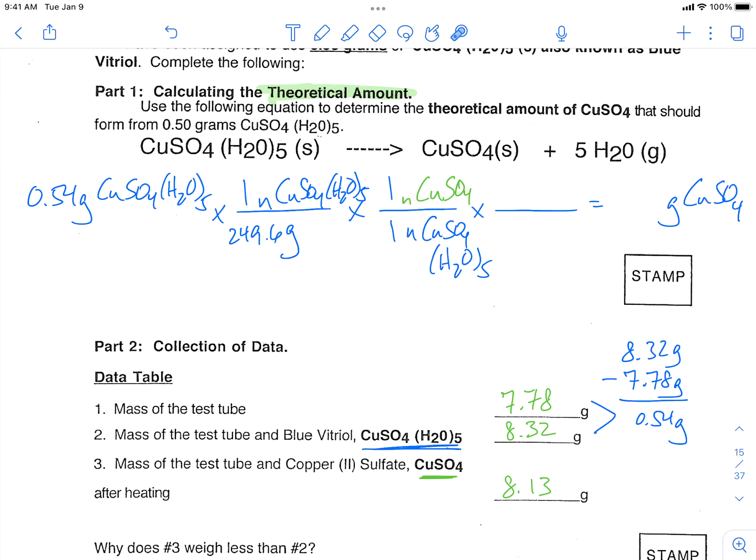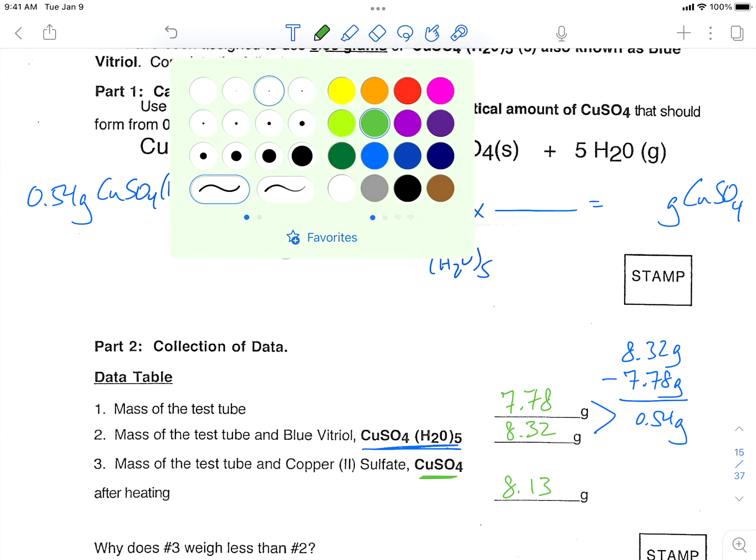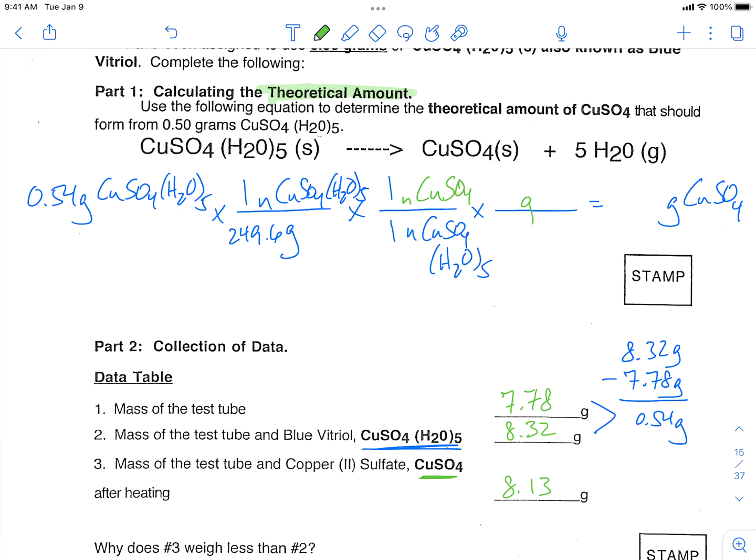Our last step is to convert from moles of copper sulfate to grams of copper sulfate. CuSO4. And this is for every mole of CuSO4. The units of grams per mole tell me we're using molar mass. So this is for every one mole. And 249.6 minus 90 grams from the water gives us a molar mass of 159.6 grams.